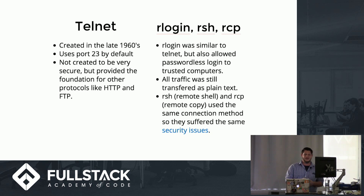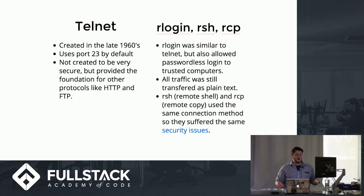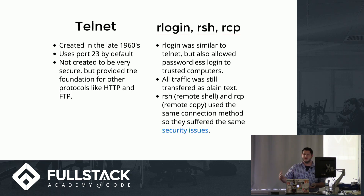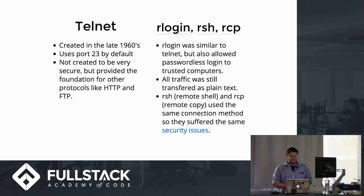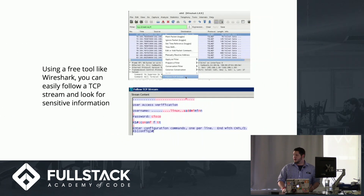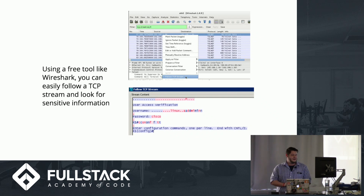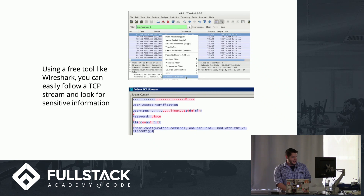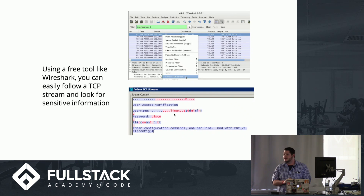Along with Telnet, there was also rlogin, RSH, and RCP. RCP is used to copy files; RSH is remote shell, but it also uses Telnet so it's not encrypted. rlogin is a way to communicate to another server and have it remember you — but still, nothing is encrypted. So if you're using Telnet and somebody on your network has something like Wireshark, they can follow your Telnet connection and see the username, the password, and pretty much anything you're sending on the network.